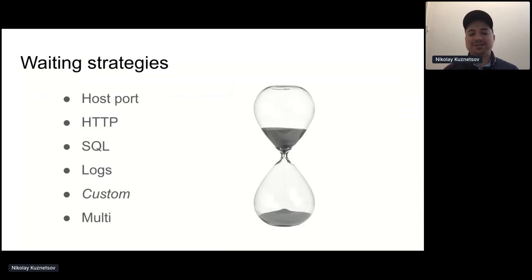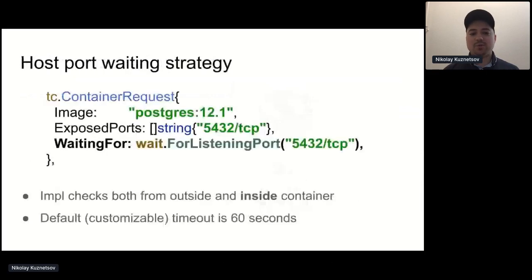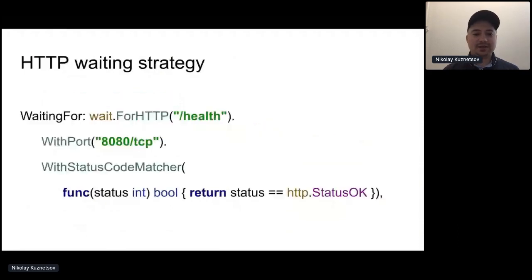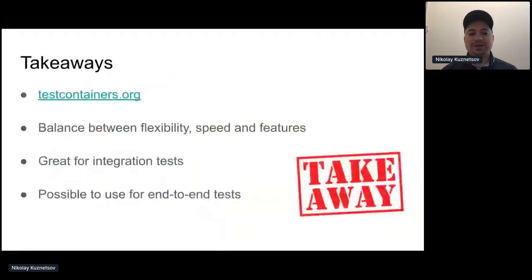The library provides waiting strategies: you can wait for a host port, for an HTTP endpoint status and payload, for a SQL endpoint, or for a payload inside the container logs. You can also implement your own custom waiting strategy and combine them into one. For the host port waiting strategy, you specify an additional parameter in your container request indicating which port you're waiting for. The implementation checks from outside the container at the host port, and also inside the container at the service port. The default timeout is 60 seconds. For the HTTP waiting strategy, you can wait for a specific endpoint at a specific port and check the status and even the payload.